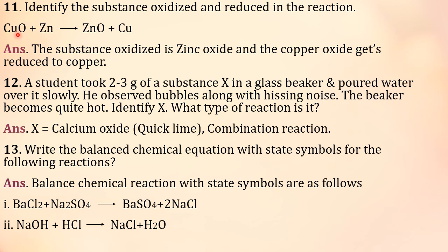Question number 12: A student took 2 to 3 grams of a substance X in a glass beaker and poured water over it slowly. He observed bubbles along with hissing noise. The beaker becomes quite hot. Identify X. What type of reaction is it? This is chuna, we bring chuna from the market. So when you put chuna in the water, it becomes hot and at the same time it gives hissing sound, hissing noise. So that means substance X is calcium oxide, chuna, or quick lime. When CaO reacts with water to give Ca(OH)2, this reaction comes under the category combination reaction.